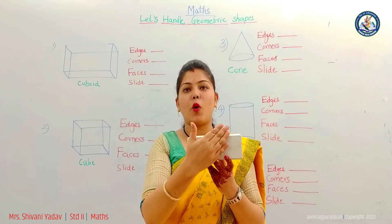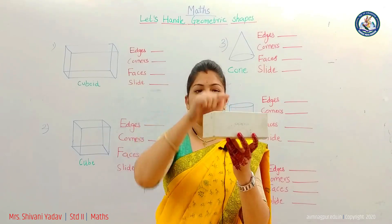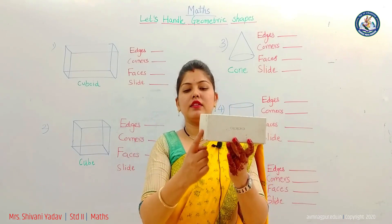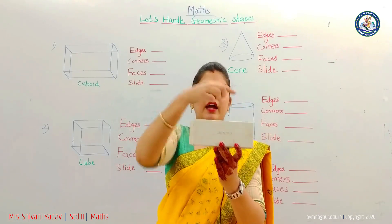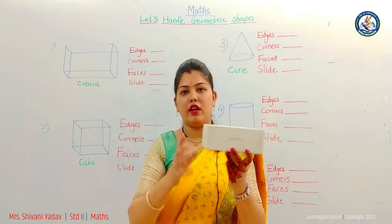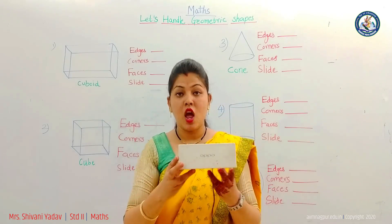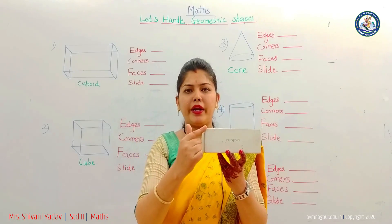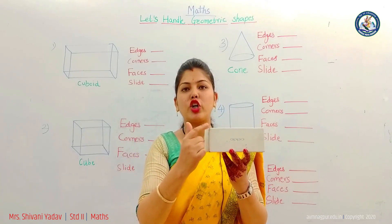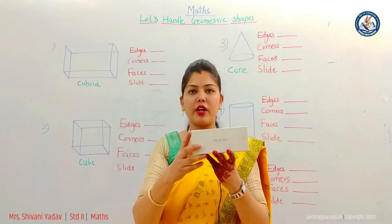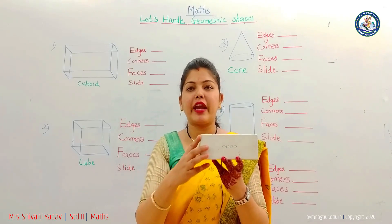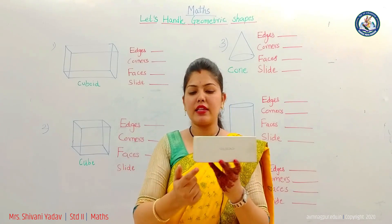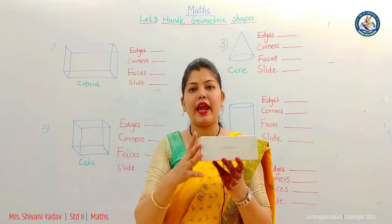How many edges does a cuboid have? Counting: one, two, three, four, five, six, seven, eight, nine, ten, eleven and twelve. Twelve edges. Now corners — when two edges meet at a point, that point is called a corner. How many corners does a cuboid have? A cuboid has eight corners: one, two, three, four, five, six, seven and eight. Eight corners.